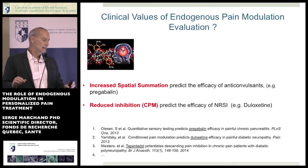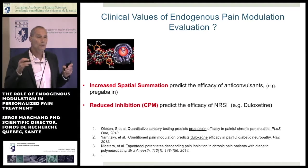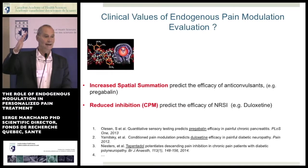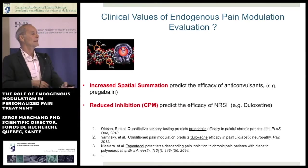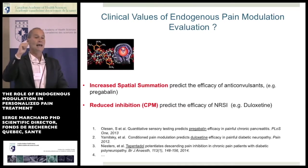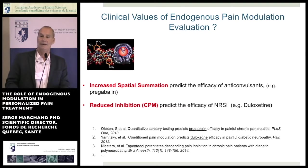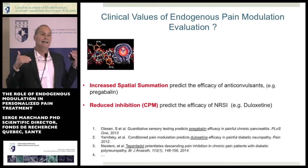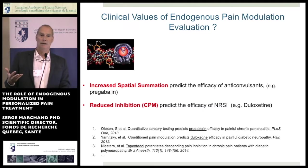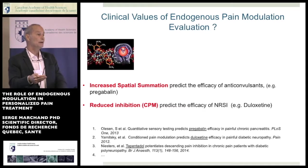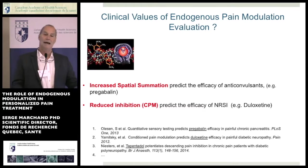There are now tens and tens of studies showing that if you want to predict the efficacy of anticonvulsants, you use spatial summation. If you have a patient with chronic pain, you measure thermal stimulation on them and see an increase in spatial summation — there's a good chance the anticonvulsant like pregabalin will have a good effect. If you want to predict the effect of duloxetine, spatial summation is not a good test. But if you test the inhibitory system and see decreased efficacy, then you will have a good result.